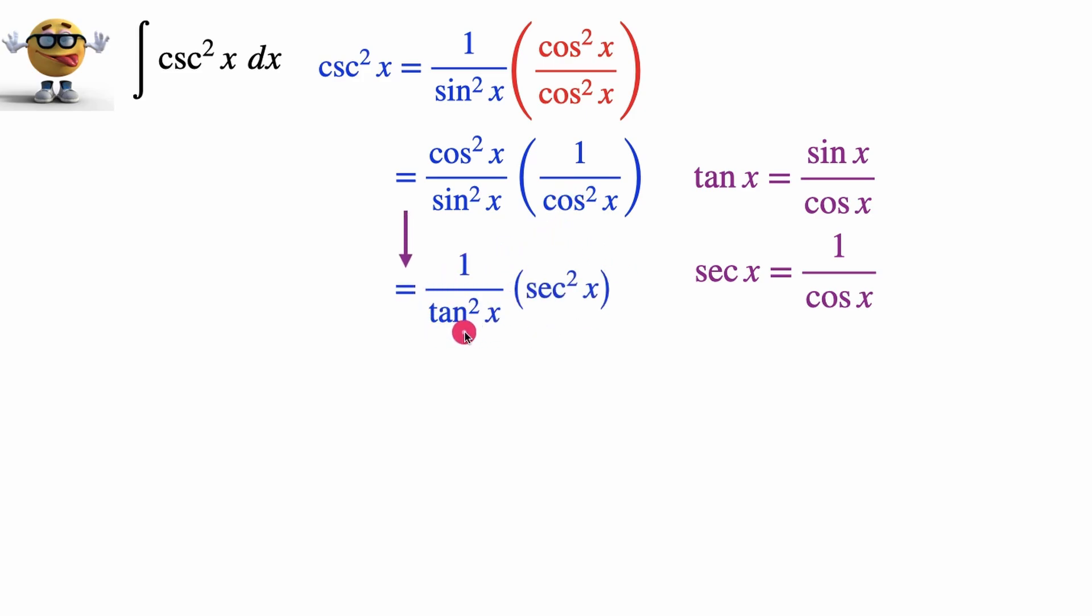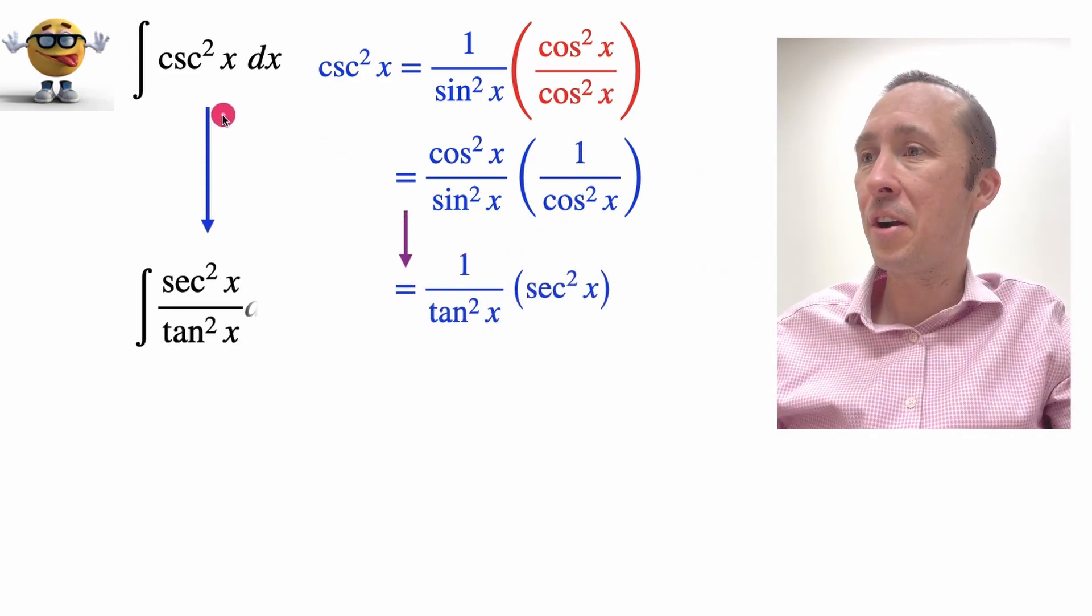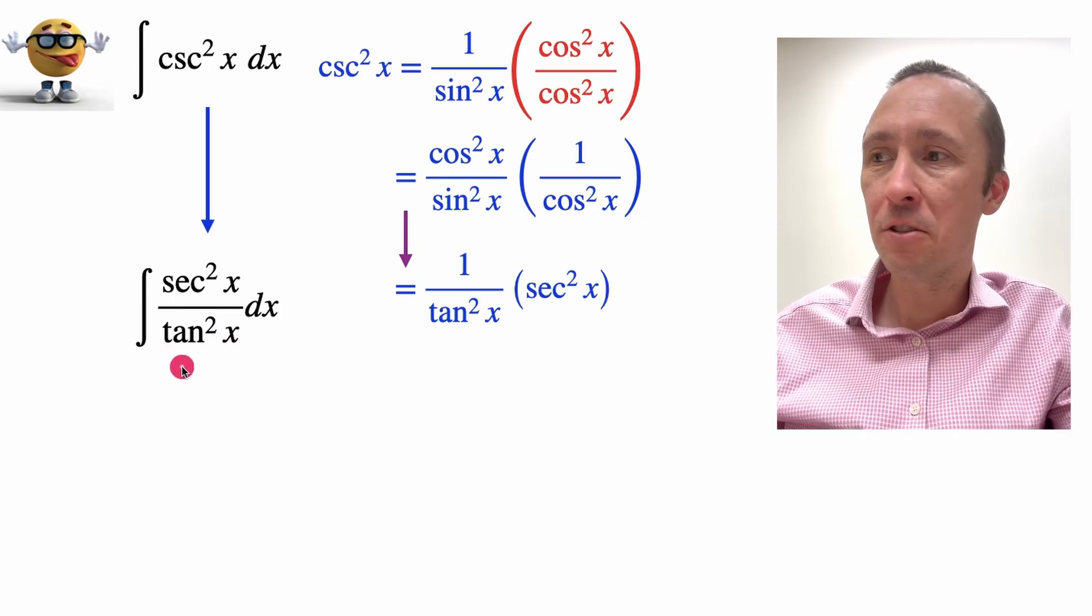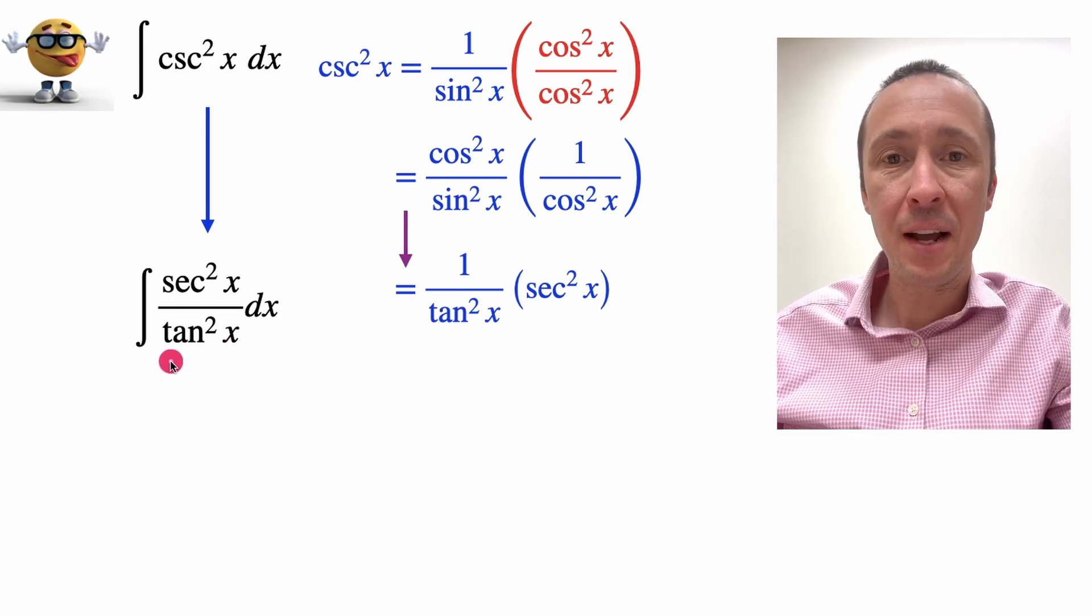If we do that, this is what we got right here. So if we plug this into our integral, we now have the integral of secant squared x divided by tan squared x.